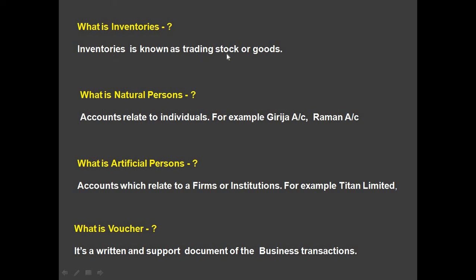What is a natural person? Accounts related to individuals are called natural persons — for example, Grisha account or Raman account. What is an artificial person? Accounts related to firms or institutions are called artificial persons — for example, Titan Limited.